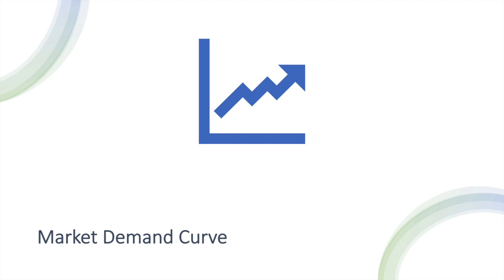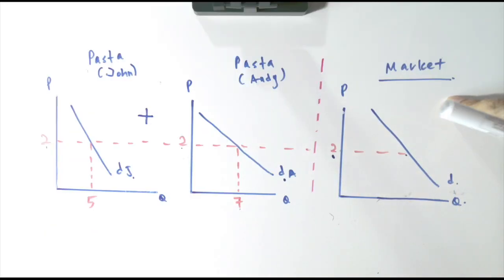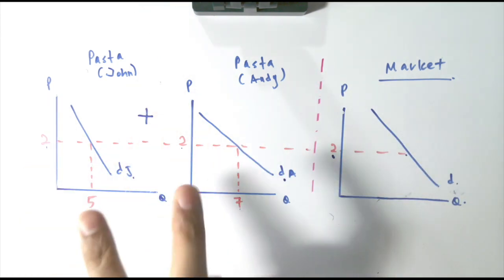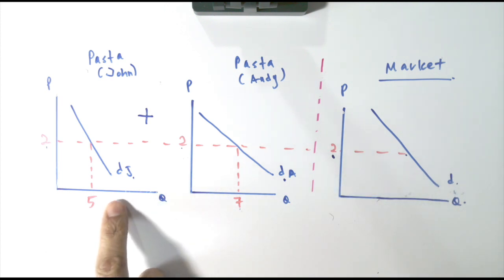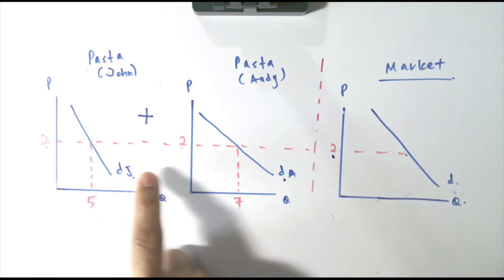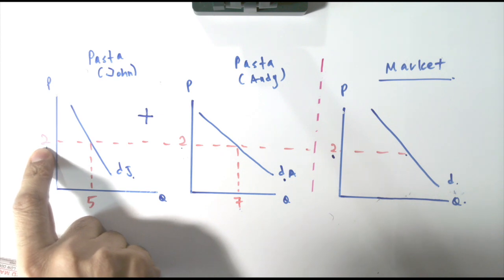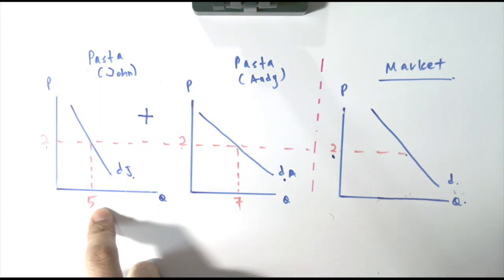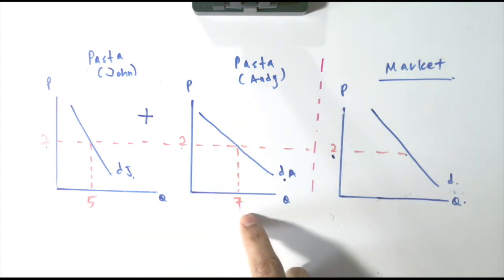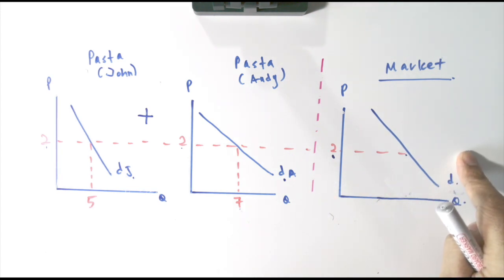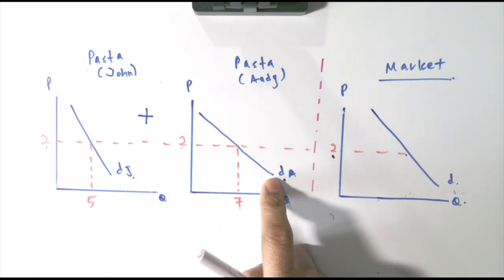Based on the previous example, we discussed an individual demand curve. Now we will look into how to derive a market demand curve for pasta. Assuming that in this world we only have two people who consume pasta — John and Andy. This is the individual demand curve for John and the individual demand curve for Andy. At $2, John consumes 5 packets of pasta a month. At price $2, Andy consumes 7 packets of pasta. So how do we get the market demand curve? The market demand curve is the summation of individual demand curves. At price $2, the quantity demanded will be 5 plus 7, which equals 12.